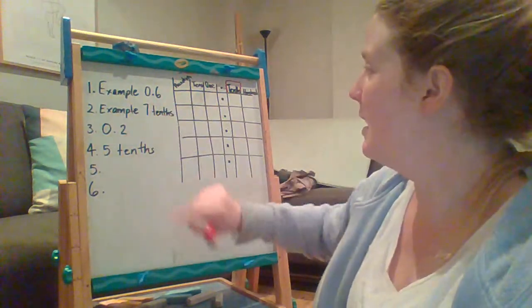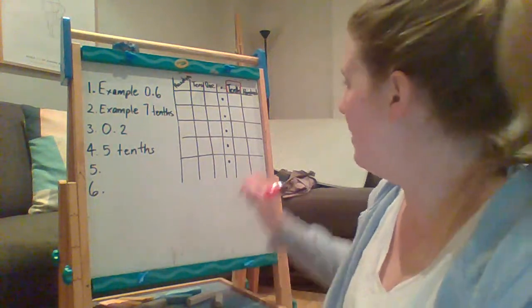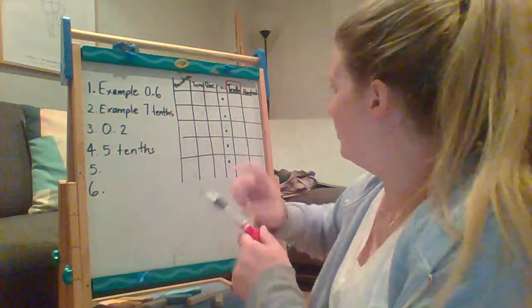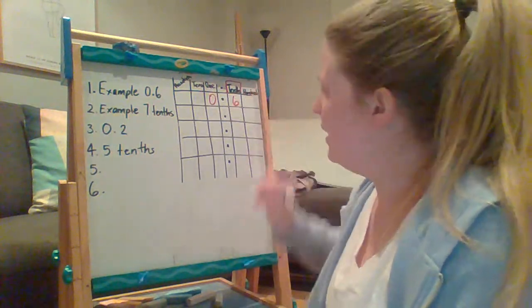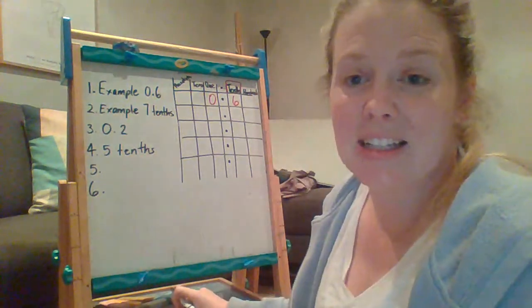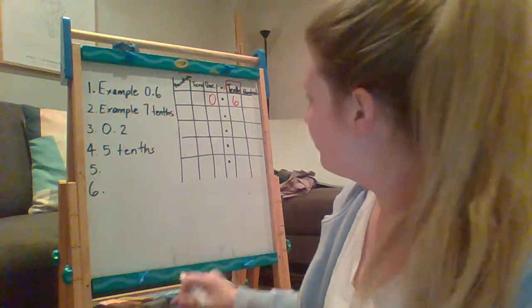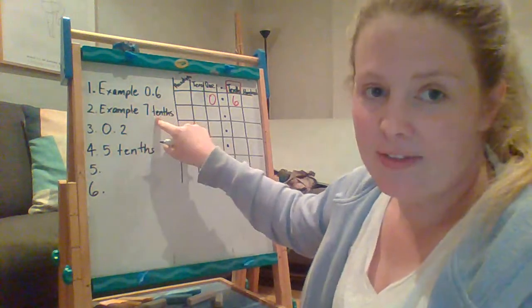So 0.6. To show that in the table, I would go, I might write it in red actually, zero, I've already got my point, six, which is six tenths, as we know.